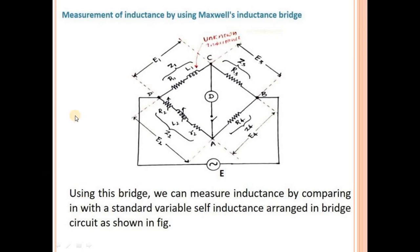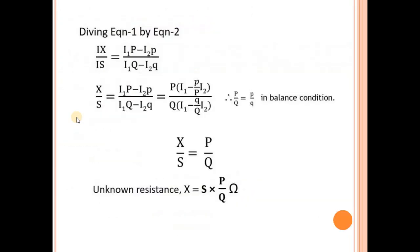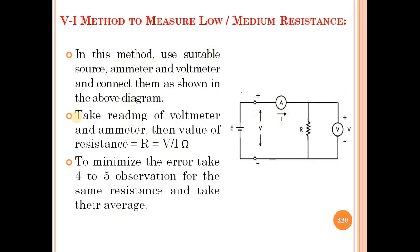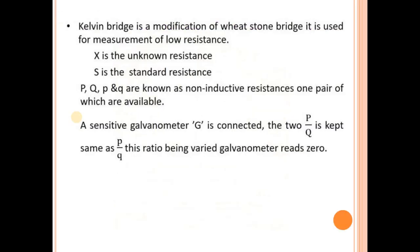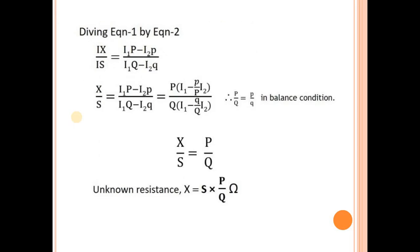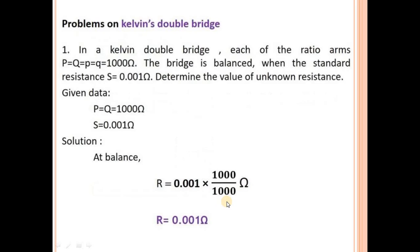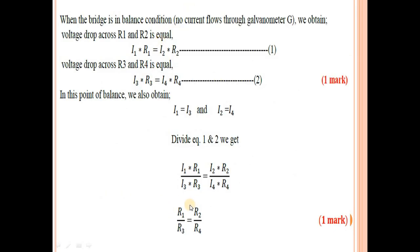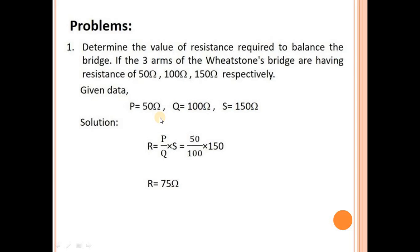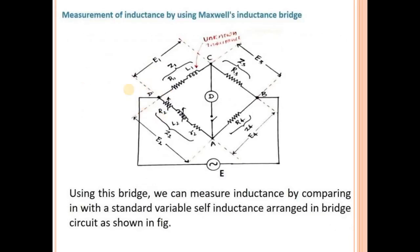In the last lecture we discussed the VI method to measure low and medium resistance, Kelvin's double bridge method for measurement of unknown resistance with formula x = s × p/q, and solved examples. We also discussed Wheatstone bridge with formula R1/R3 = R2/R4 and solved examples. That much of the syllabus we covered in the last lecture.